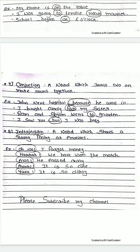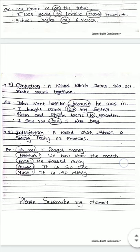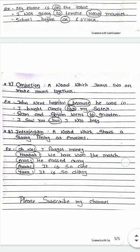Now conjunction. Conjunction ka matlab hai aisa word jo do sentences ya do words ko join karke ek mein convert kar deta hai — a word which joins two or more sentences or nouns together. Example: 'John went to hospital because he was ill' — because is a conjunction. 'I bought candy for my sister' — for is a conjunction. 'Ram and Shyam went to the garden' — and is a conjunction. 'I saw you but I was busy' — but is a conjunction.